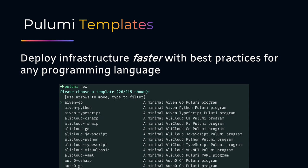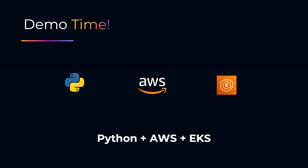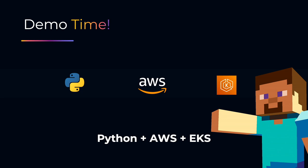Now it's time for the demo. We've covered a lot of the theory and now let's see Pulumi working in action. We're going to use Python, AWS, and EKS. And there's a fun twist — we're also going to deploy a Minecraft server on top of the EKS cluster. So we'll use a Pulumi Python template to create an EKS infrastructure and then deploy a Minecraft server on top of it. Let's head over to the demo.